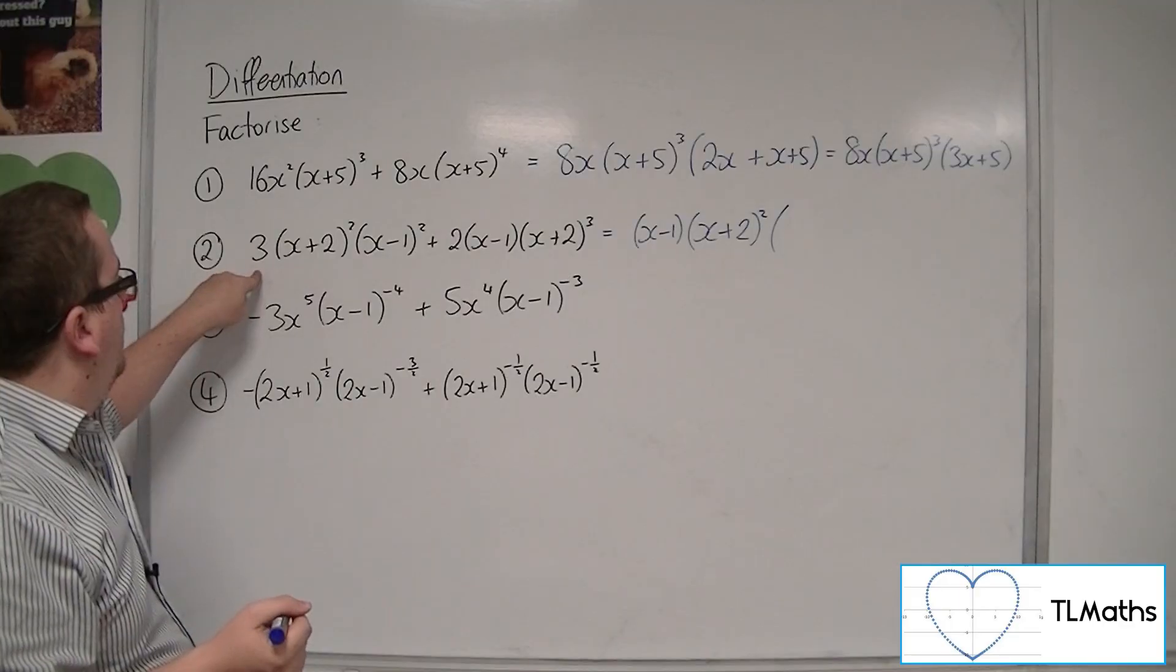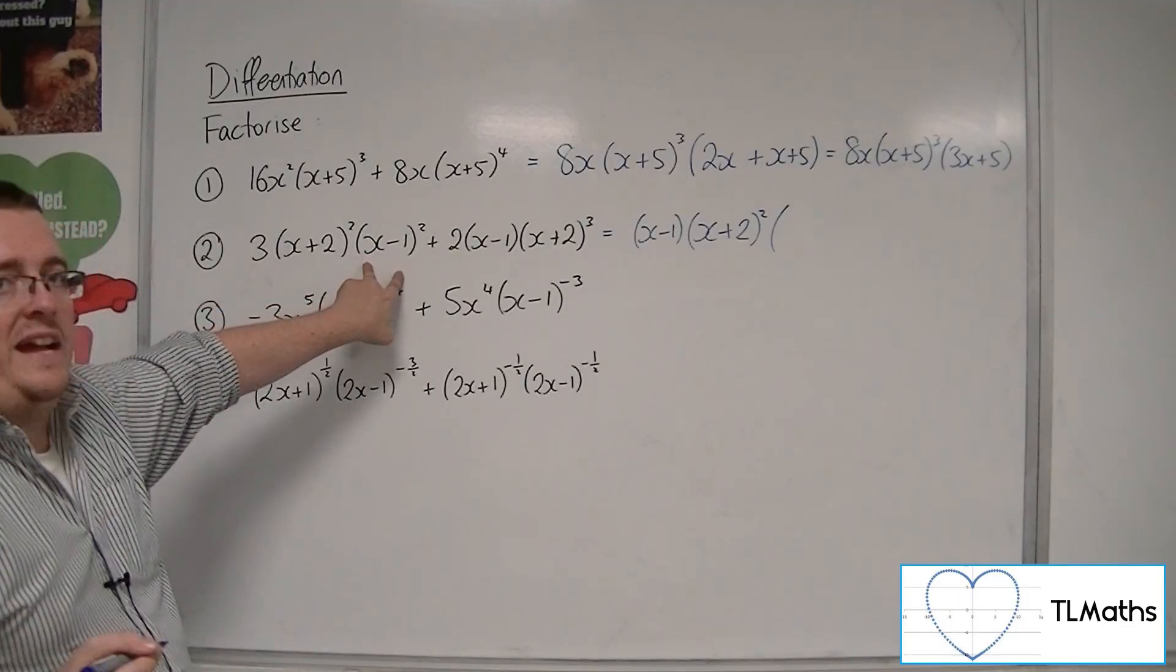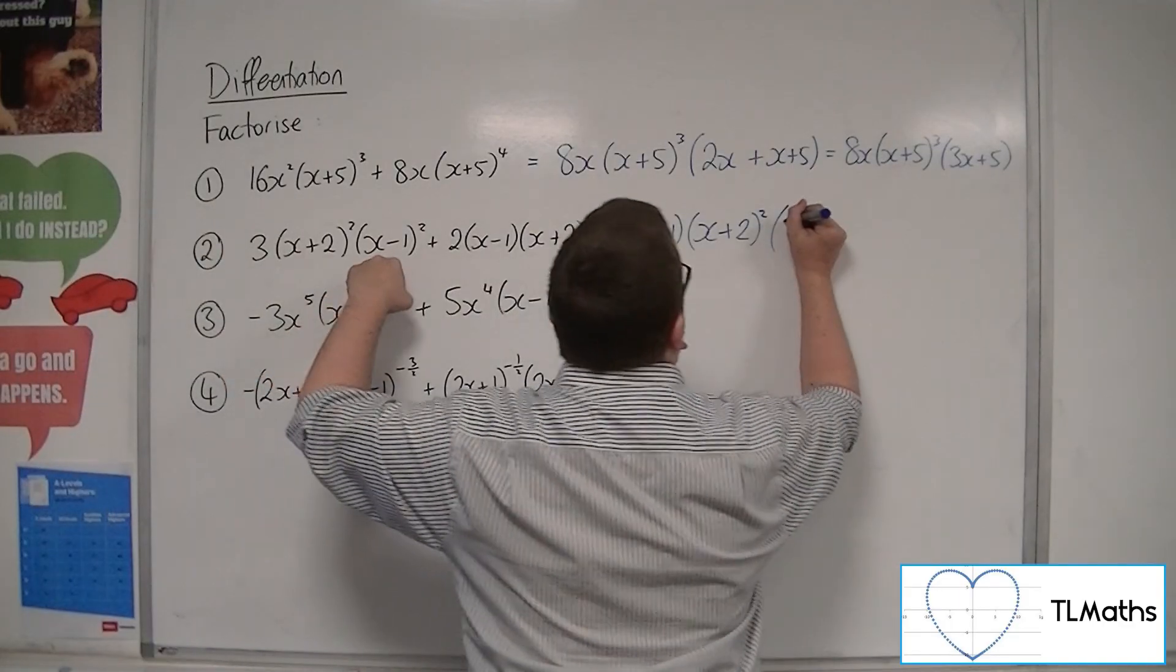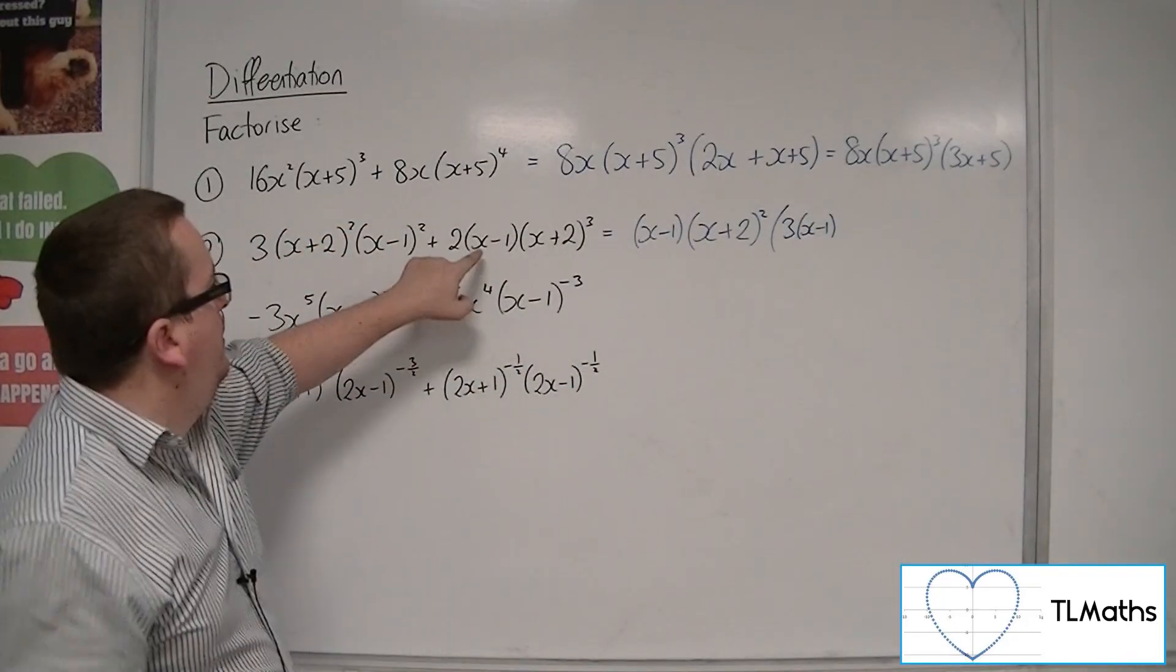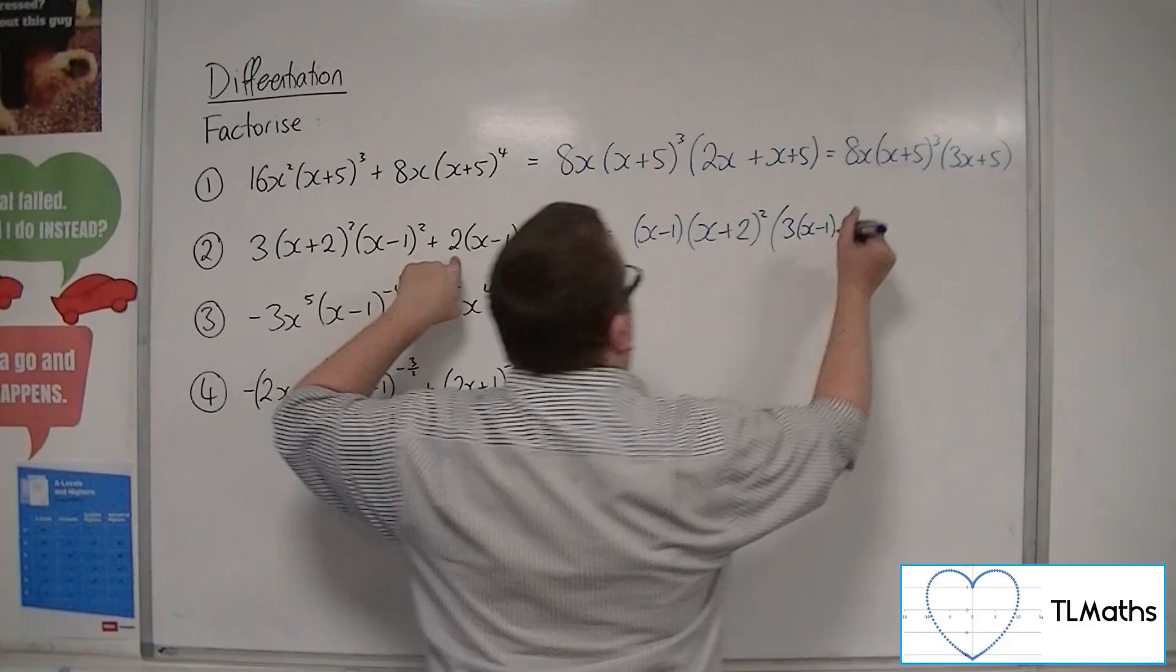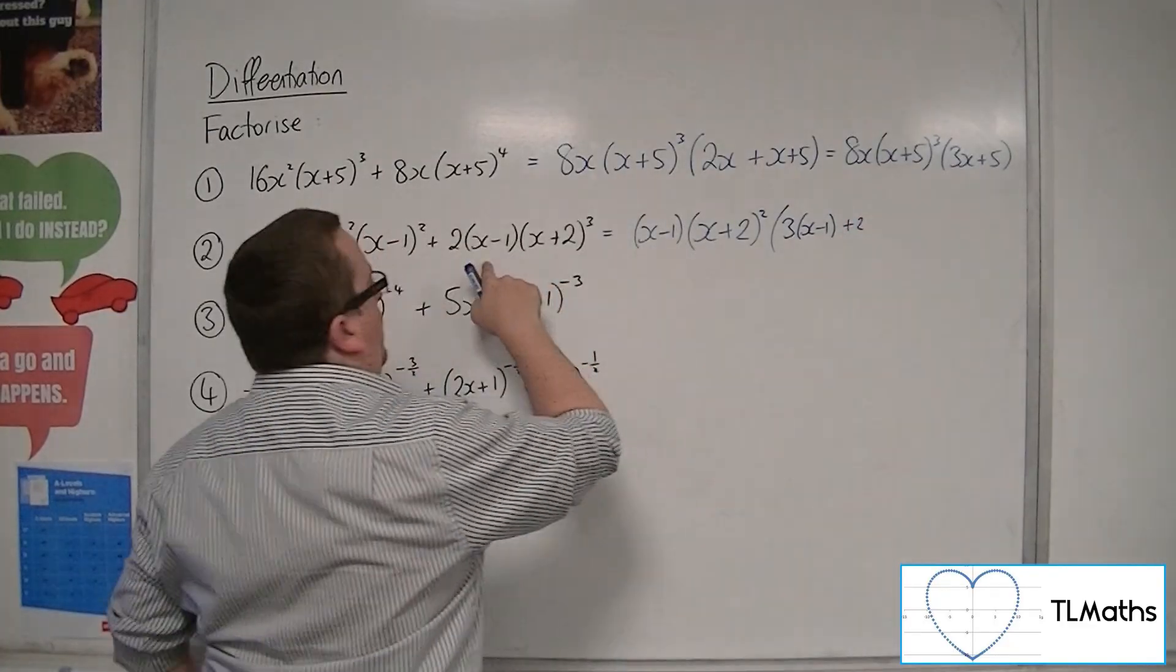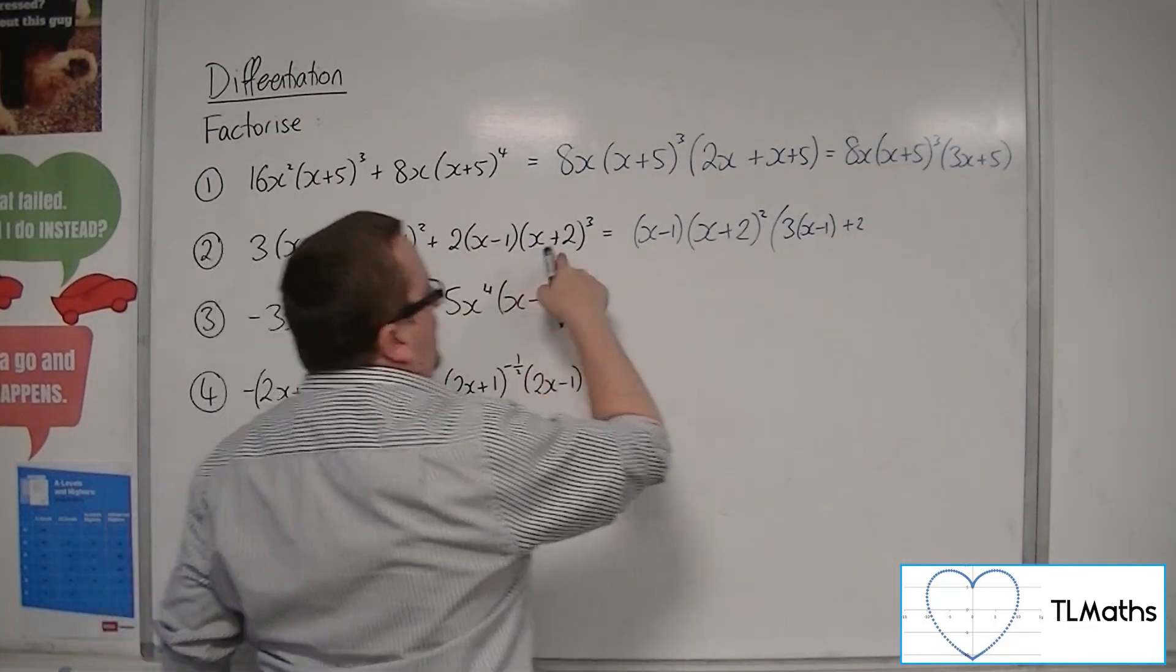So what are we left with? Well, from here we've got the 3, and we've got one of the (x-1) brackets, so 3 lots of (x-1). And over here we've got the 2. The (x-1) is covered, and I've got an (x+2) remaining.